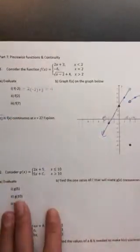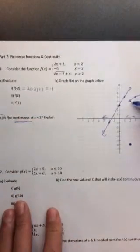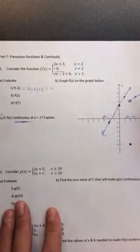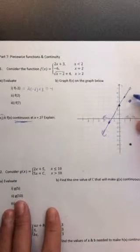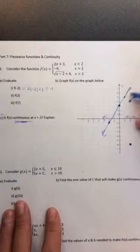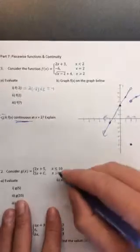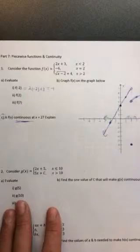Part C is important. It says, is f of x continuous at x equals 2? And the word continuous means that there are no breaks in it. And here there is definitely a break. There's a break here and here. You have to pick your pencil up to continue drawing it. And so it is not continuous at x equals 2 because there is a break.